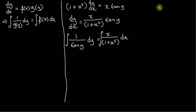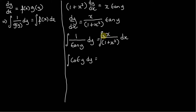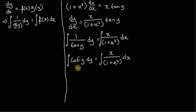So we can rewrite 1/tan(y) as cot(y). We're going to integrate cot(y) with respect to y on the left-hand side. On the left-hand side, this is really simple — it's a standard result. If you integrate cot(y), you just end up with ln|sin(y)|. That's just a standard result. When dealing with differential equations, if you can simplify things so you integrate and get standard results, that's the ideal — and that's perfect on the left-hand side.